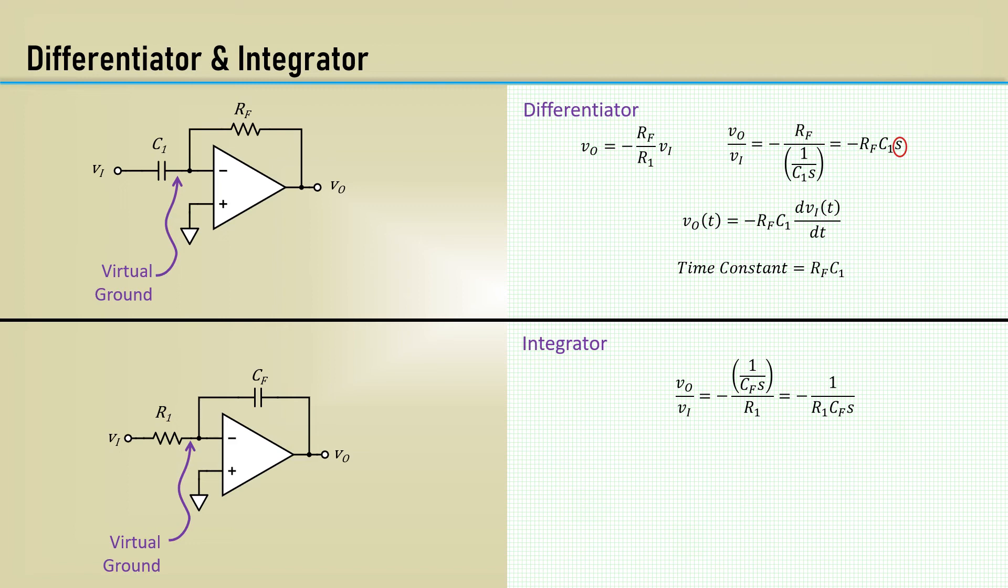Because a division by S in the complex frequency domain is equivalent to integration in the time domain, it means that the time domain output voltage is given by this equation. Because R1Cf has the units of seconds, it's also called the integrator time constant. We have deduced by circuit analysis that this is an integral function because the Laplace variable S in the denominator, in as much 1 over S is the integral.